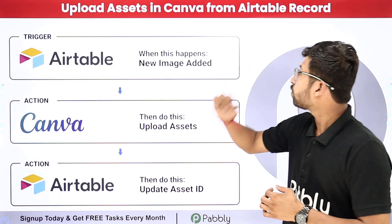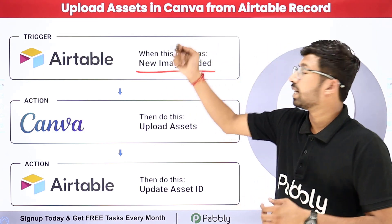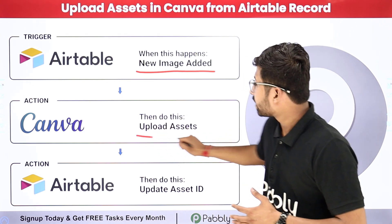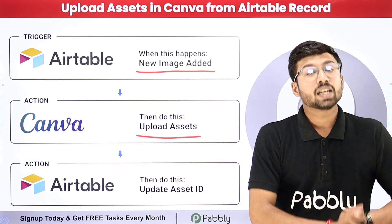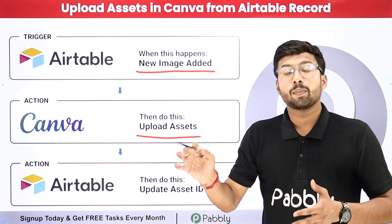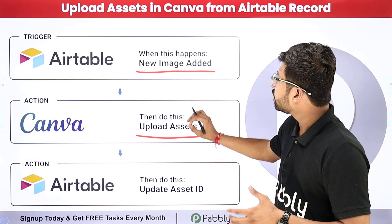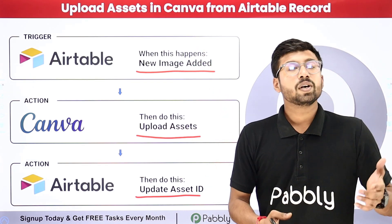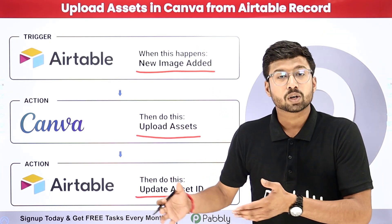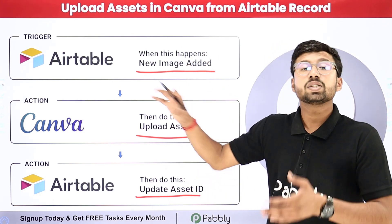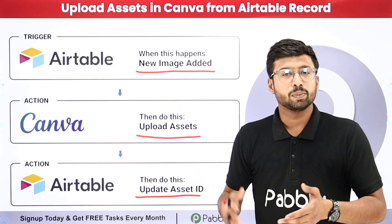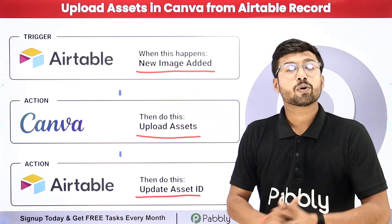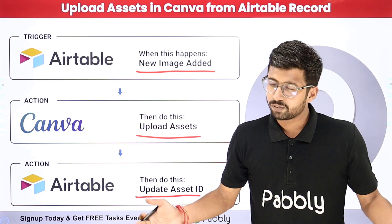In this automation, we just have to add the image as a new record in a table, and automatically the same image with the same file name will be uploaded in our Canva account. After uploading the image in Canva, every image will get a unique job ID or design ID, which will also be updated in the table database for the same image. Furthermore, you can set up different automations with the same details and use these images in your Canva automations to create posts as well.